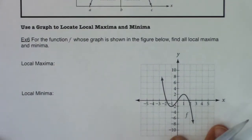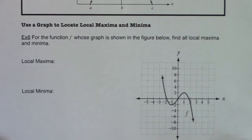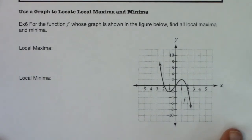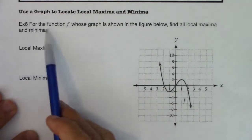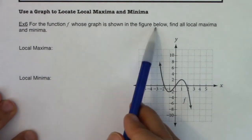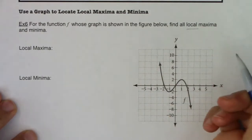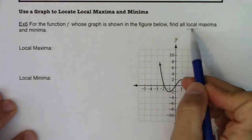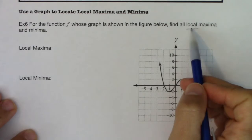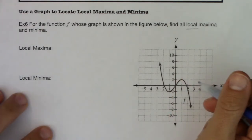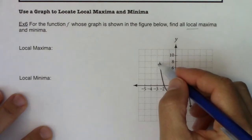With that, let's take a look at Example 6. We have a cubic function shown here. The problem says: for the function f whose graph is shown in the figure, find all local maxes and mins — meaning find me the highs and the lows. I'll come back in a moment to what I mean by 'local.'